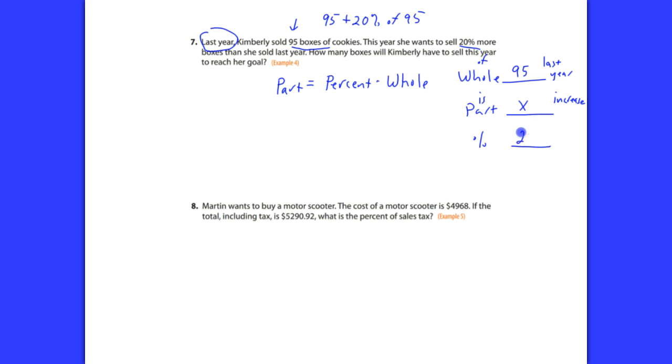And we know that the percent that she wants to increase is 20%. Now remember, we used the decimal value 0.2 to do that. So if the part is x, and the percent is 0.2, or 2 tenths, times the whole, which is 95. Well, x is isolated. And I could go 2 tenths times 95 and get 19. So she wants to sell 19 more boxes.